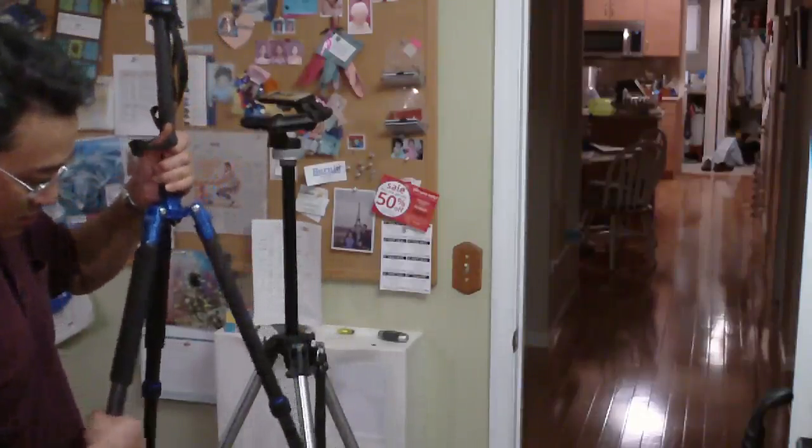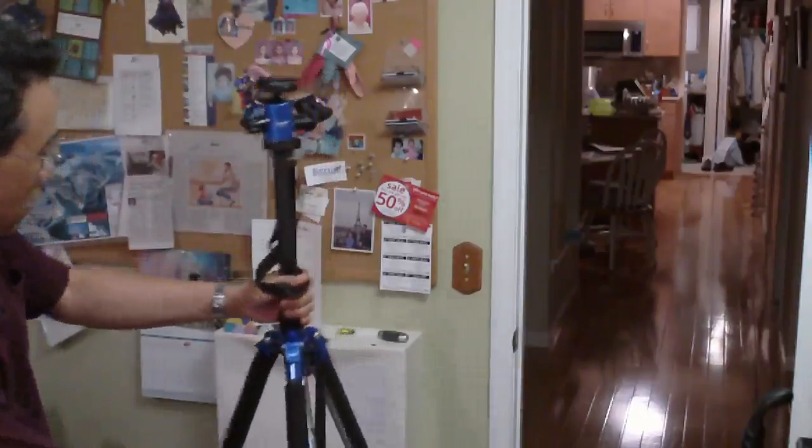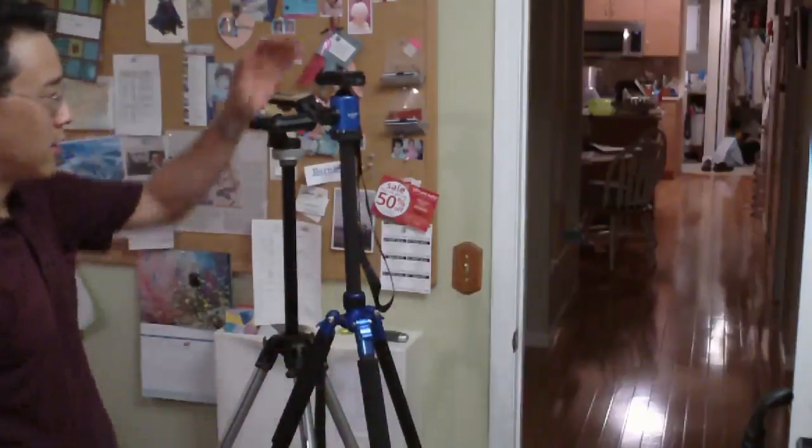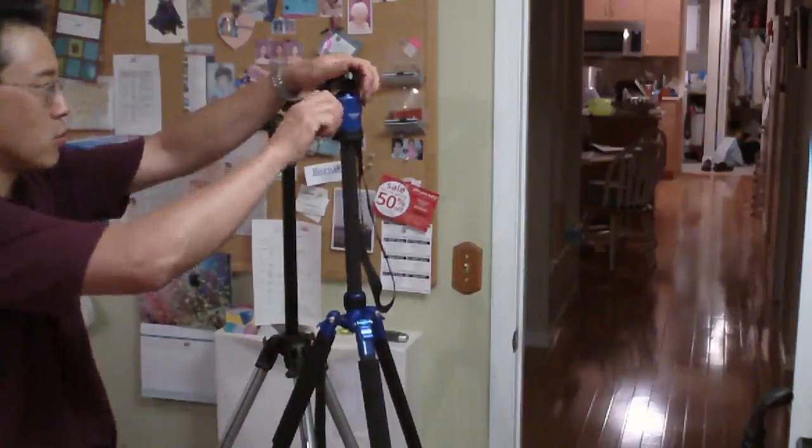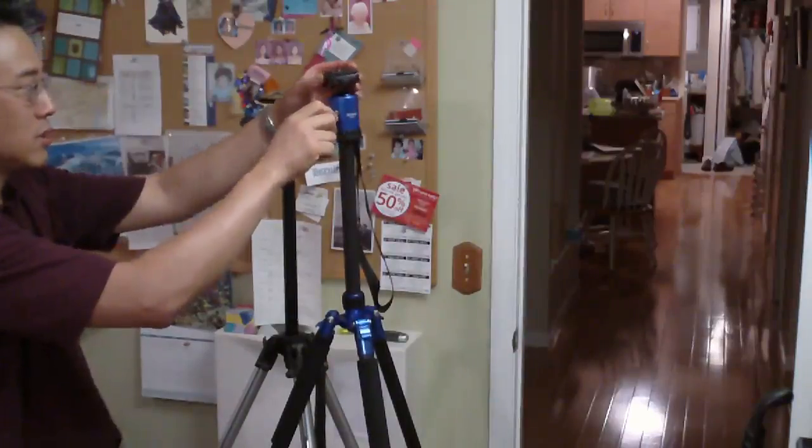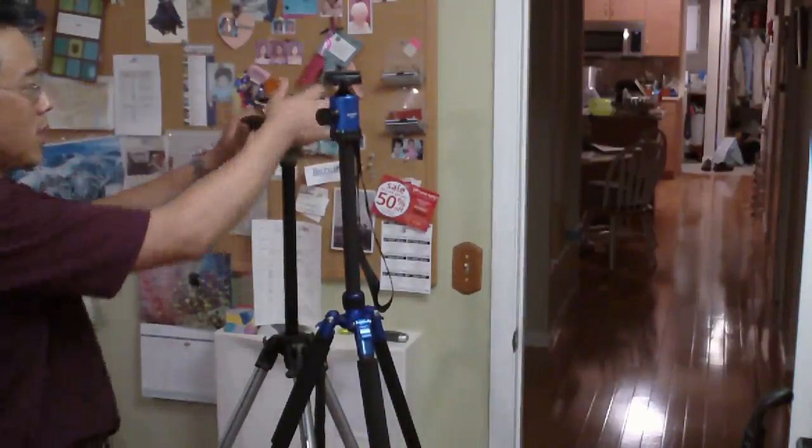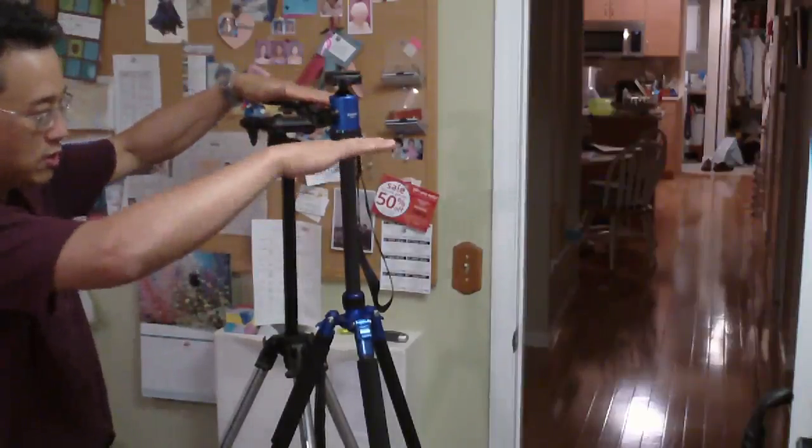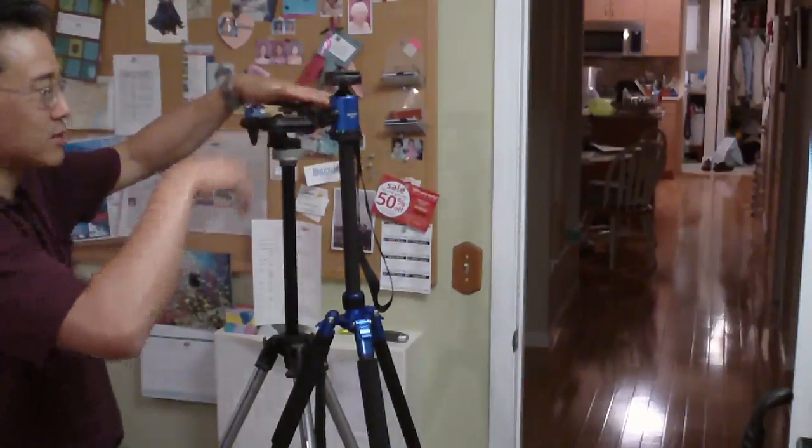And as you can see, we're basically at a similar height. And the motions, this is a ball head. There is a level here, so this does allow you to control both. I'm more accustomed to this type, where you adjust your different tilt axes separately.